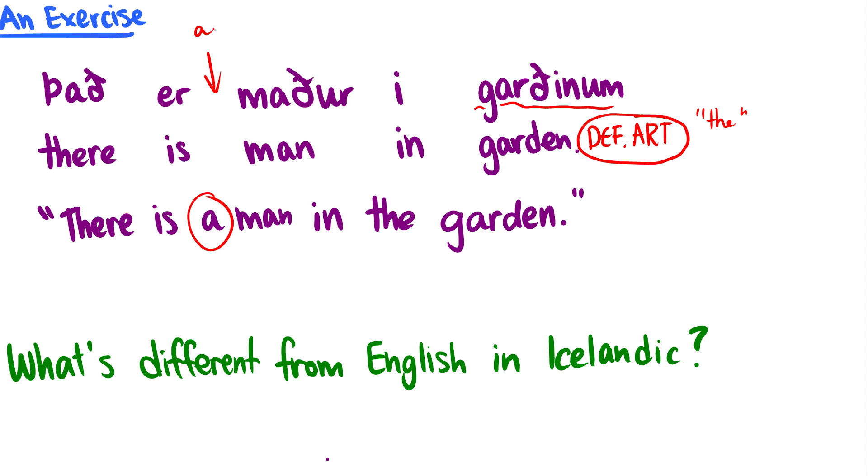Okay, but for the rest of it, word order seems the same. So there is man in the garden. You know, the language and words are different obviously, but it looks like one of the main differences here is that articles in Icelandic are much different than they are in English.